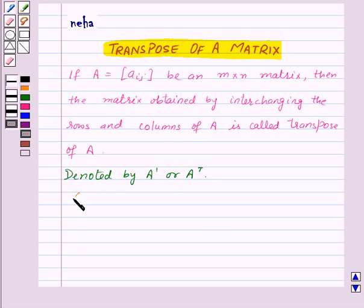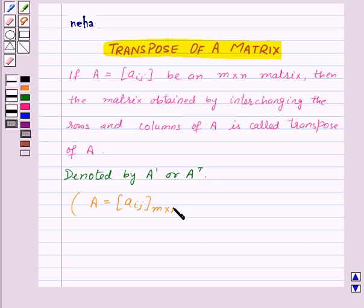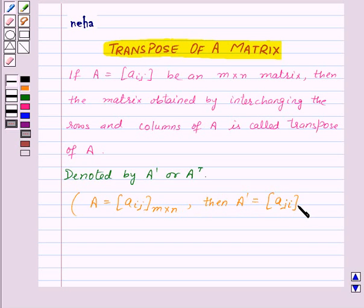Symbolically, if A is a matrix given by Aij of order M by N, then A transpose will be the matrix given by Aji of order N by M.